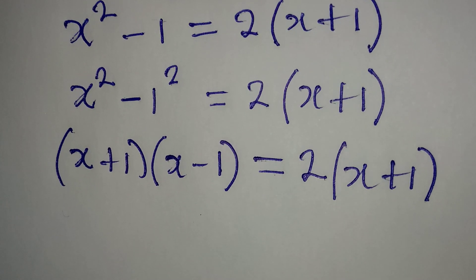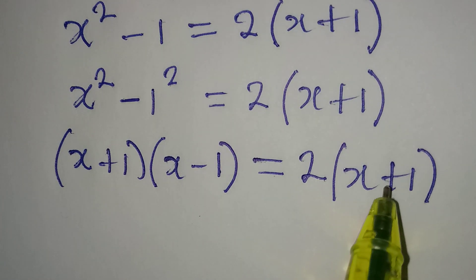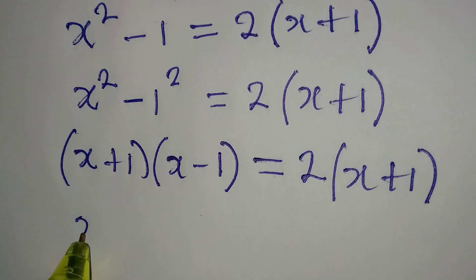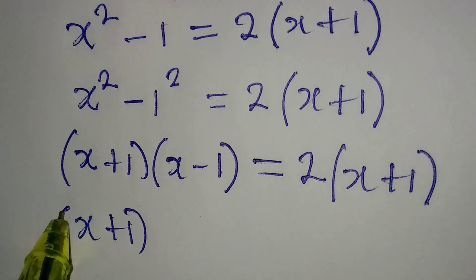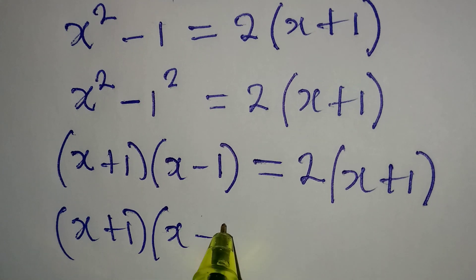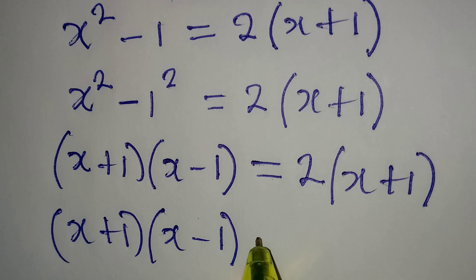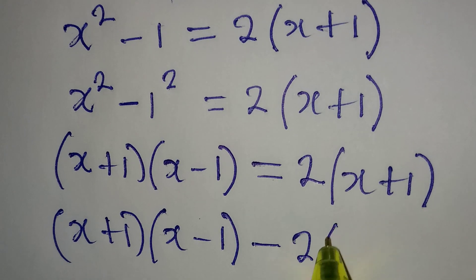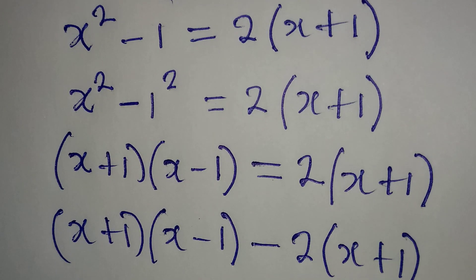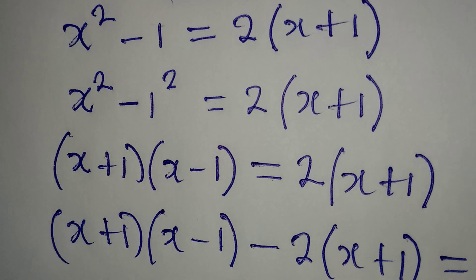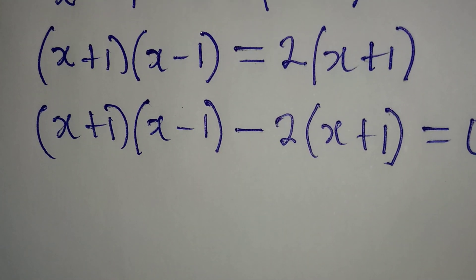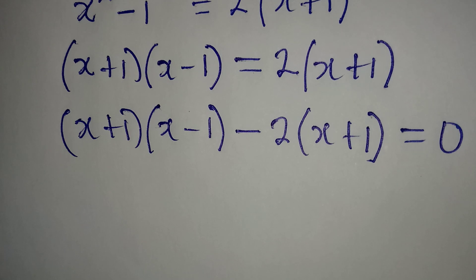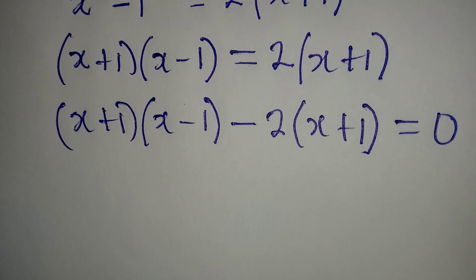Now here is what I want to do: I want to bring this to the left, so I will be having x plus 1 into x minus 1, then we have minus because if this comes that becomes negative 2 into x plus 1, and this is equal to 0.